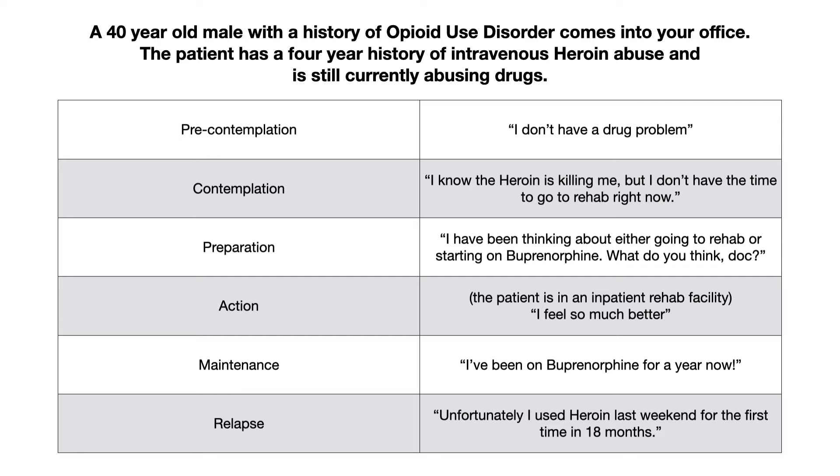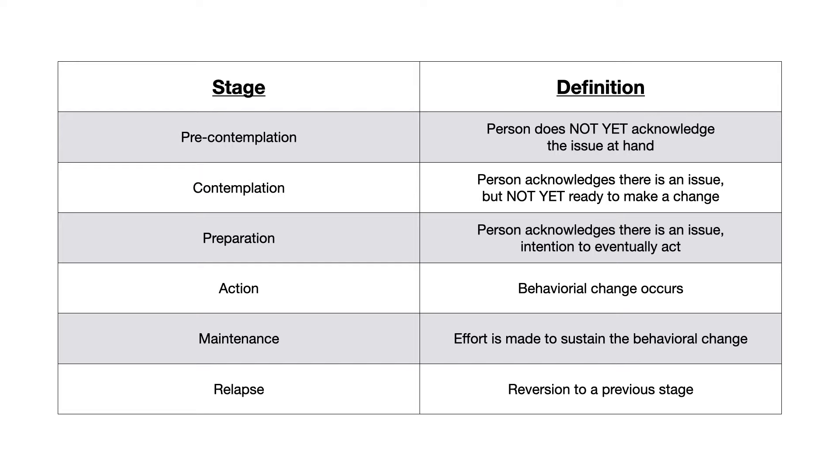And then relapse pretty easy. This person relapses on heroin and unfortunately uses again for the first time in 18 months. And that kind of bumps them backwards into a previous stage. Okay, so this was an example of the various stages. But if we go back to our overview definition here of all these different stages, I just want to talk for a second about what the hardest part of this is, and how to conceptualize this.